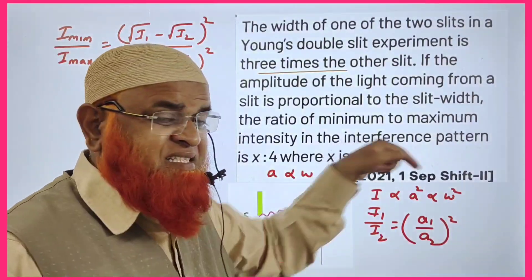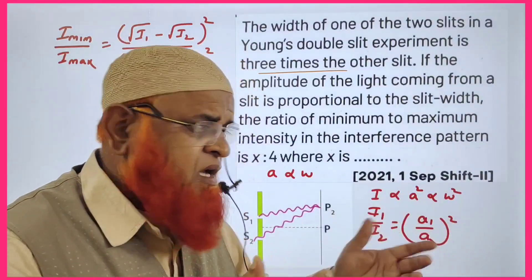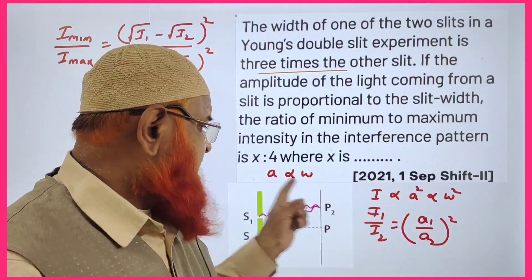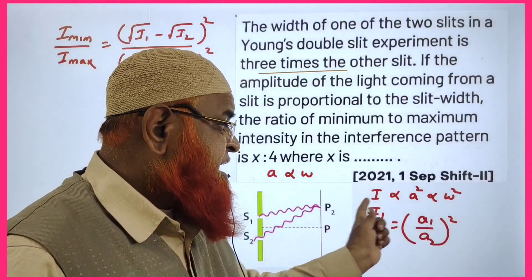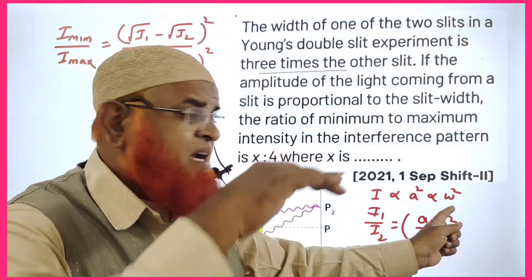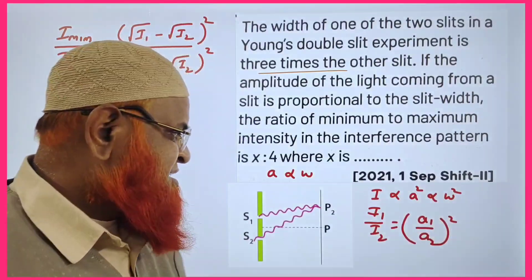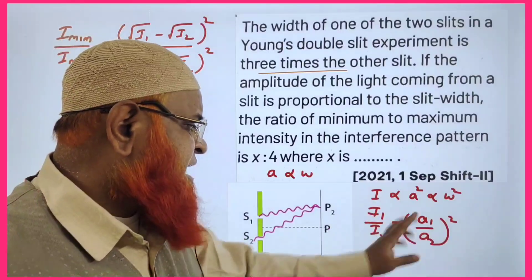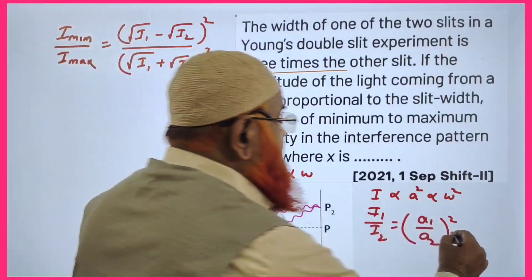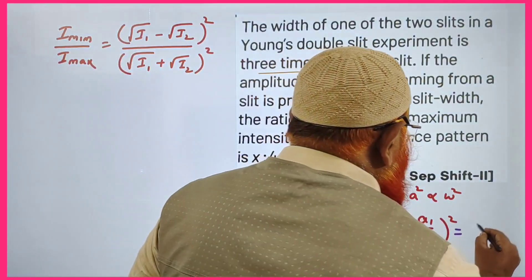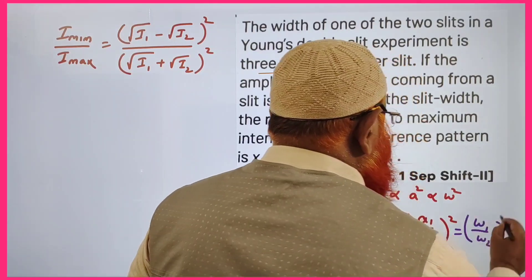Since intensity is directly proportional to the square of amplitude, and amplitude is directly proportional to width W, intensity is directly proportional to W². So I₁/I₂ = (A₁/A₂)² = (W₁/W₂)².